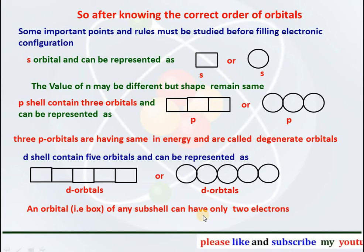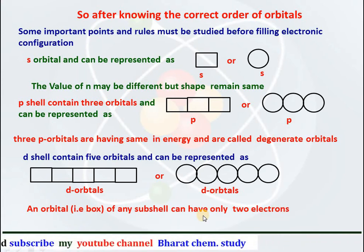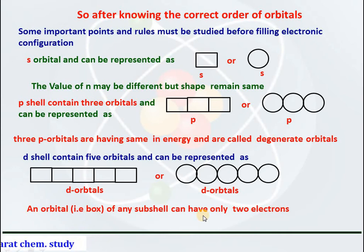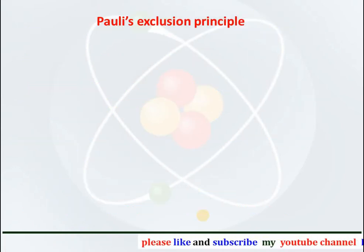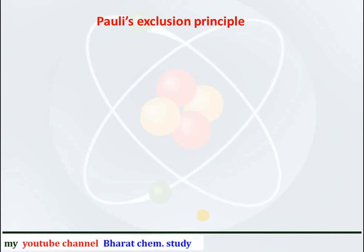The p subshell contains three orbitals and can be represented by three boxes or circles touching each other. All three orbitals touch each other because they have same energy and are called degenerate orbitals. The d subshell contains five orbitals, represented as five boxes or circles touching each other. All five d orbitals also have same energy and are called degenerate orbitals. Always remember that an orbital can have only two electrons.